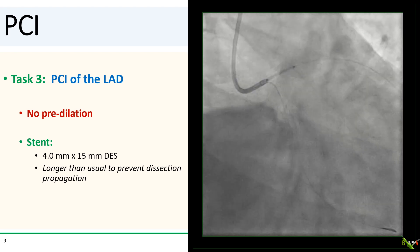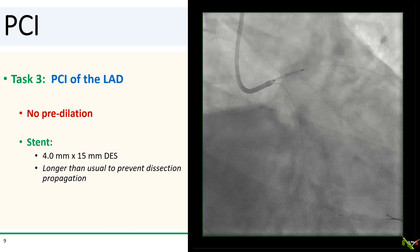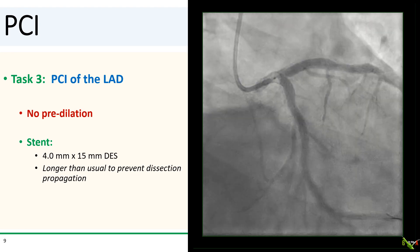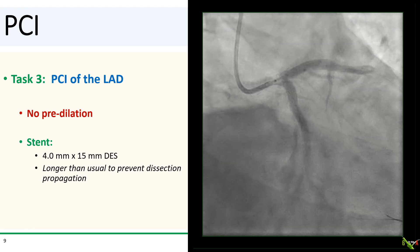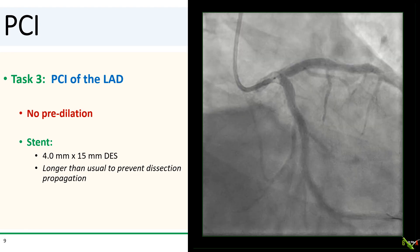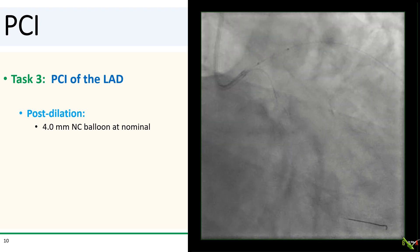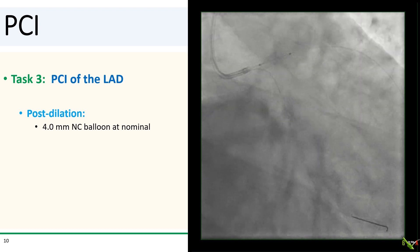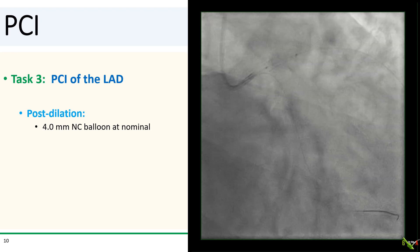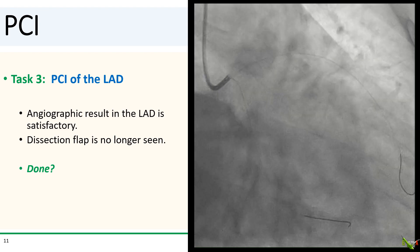On to PCI of the LAD — we did not pre-dilate. Pre-dilating a dissection runs the risk of extending it, and since this is a non-flow-limiting dissection in previously healthy tissue, there was no reason to believe the stent would not adequately expand. We stented the LAD with a 4.0 by 15 mm DES, intentionally choosing a longer stent to pin in the dissection and prevent propagation of any intramural hematoma. We post-dilated at nominal pressure to prevent squishing out any intramural hematoma. The angiographic result in the LAD seemed quite nice and we could no longer see the dissection flap.